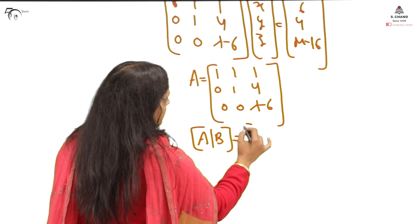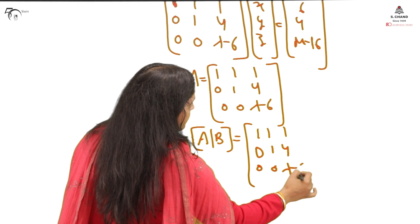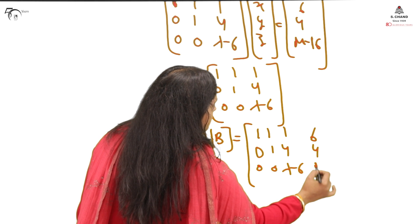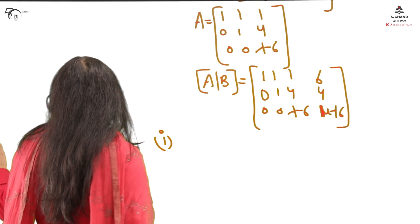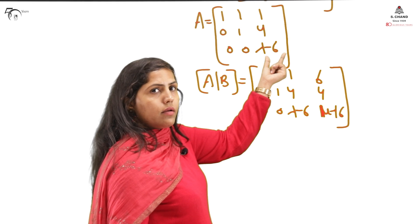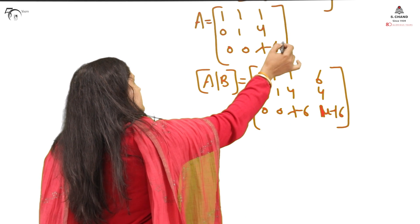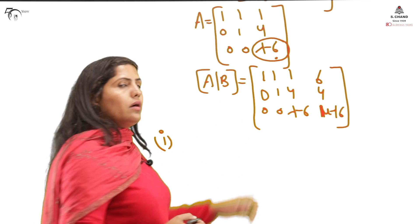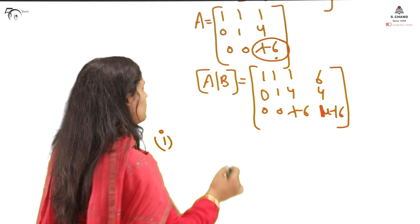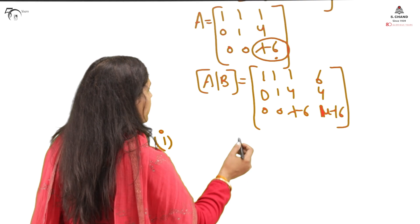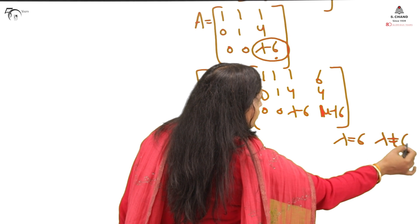Combining A and B gives the augmented matrix [A|B]. Now we observe that the key expression is λ−6 in the third row. Discussion splits into two cases for lambda: either λ=6 (making that entry 0) or λ≠6 (non-zero). Similarly, for mu: either μ=16 or μ≠16. This gives four possible cases to analyze.